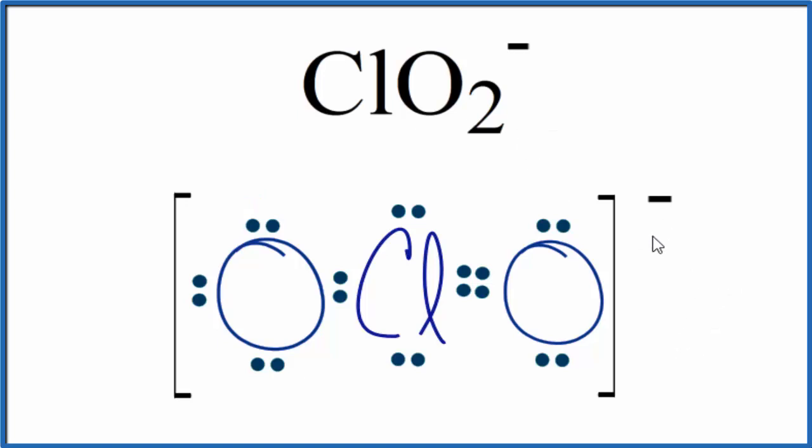There's another way we could draw the Lewis structure for this ClO2 minus ion, the chlorite ion. We could switch the double bond and the single bond. So we could put the single bond here and the double bond here. Let's do that. So we could move these out here and now we have our single bond, and then we can move these to make a double bond.